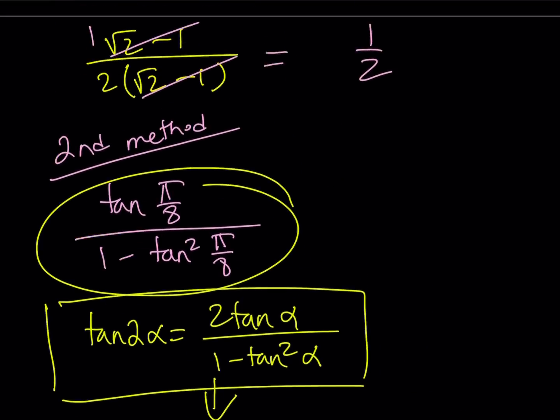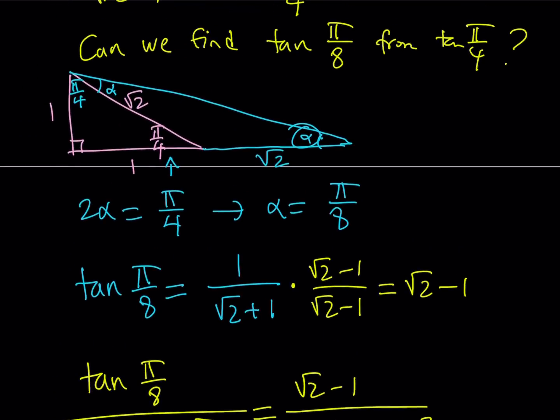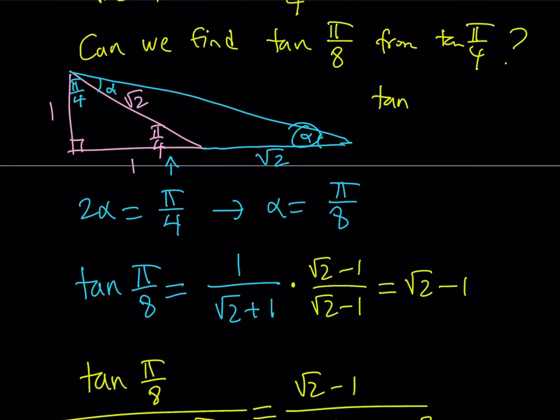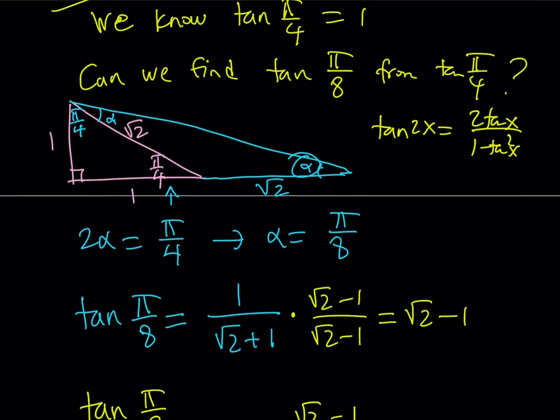Let's briefly talk about method 1b. Instead of drawing a right triangle, you could also use the tangent 2x formula and set it equal to 1. Then if you solve this equation and look at the positive solution, that's going to give you tangent pi over 8.